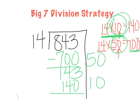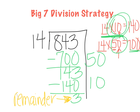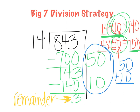Then I subtract: 3 minus 0 is 3 — and 4 minus 4 and 1 minus 1 are zeros, so I can leave those. This 3 right here — what is that? That's right, that will be the remainder of my problem. I can't forget it. But I don't write it in just yet because I have to figure out my quotient. To figure out our quotient, we take our two chunks and add them together. What is 50 plus 10? That's right — 60. So my quotient is 60 remainder 3.